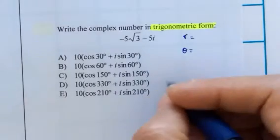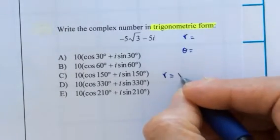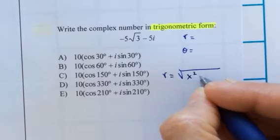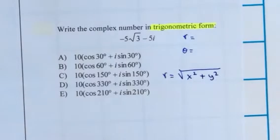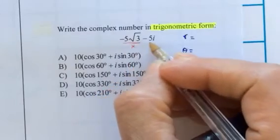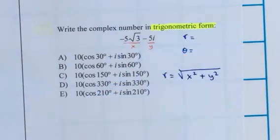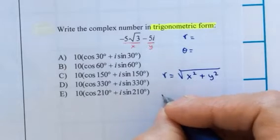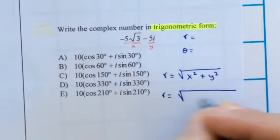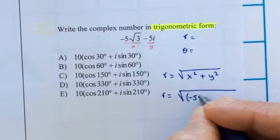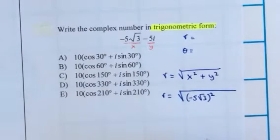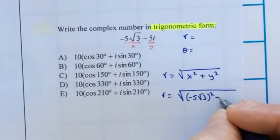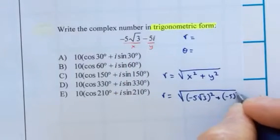To find r, we are going to use the formula r equals the square root of x squared plus y squared, where x is negative 5 square root of 3, and y is negative 5. So let me do the substitution. r equals the square root of negative 5 square root of 3 squared plus negative 5 squared.